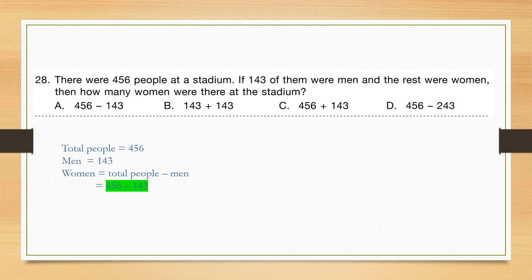Question number 28: There were 456 people at a stadium. If 143 of them were men and the rest were women, how many women were there? To calculate the number of women, subtract men from total: 456 minus 143. Correct answer is option A.